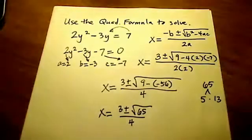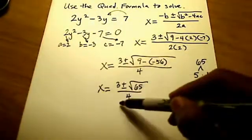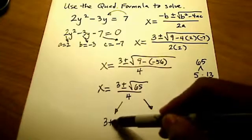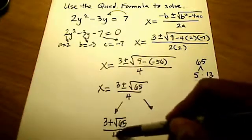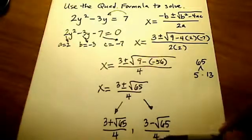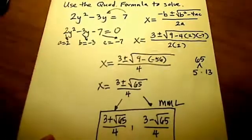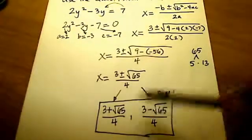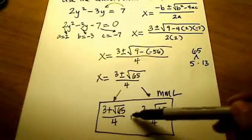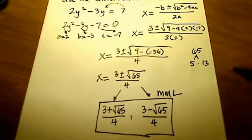On MyMathLab, if you're doing this homework assignment, let me scoot this down so you can see a little better. There is no plus or minus button, so we have to enter this answer in two ways. The first way is 3 plus the square root of 65 all over 4, comma, and then 3 minus the square root of 65 all over 4. On MyMathLab, start with the fraction button, enter the numerator, put 4 in the bottom, get out of that fraction, put the comma, then enter the second fraction. And there's your answer to that problem. Hope that helps.